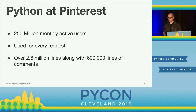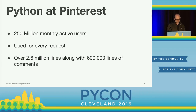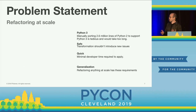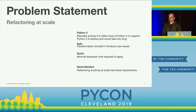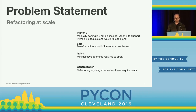For a data point, CPython itself is about a million lines of code, so we're quite a bit bigger. The problem we're dealing with — the subject of a talk I gave yesterday with my co-worker Jordan Adler — is porting our giant 2.6-million-line codebase from Python 2 to Python 3. Refactoring at this scale is really painful without automated ways to do it. You need a safe and quick way to apply transformations.